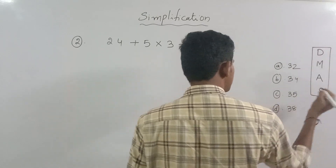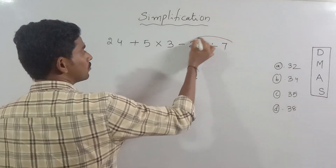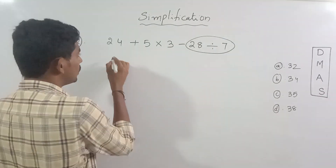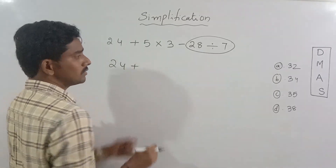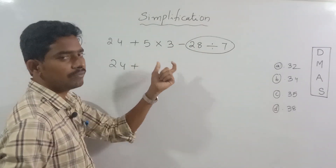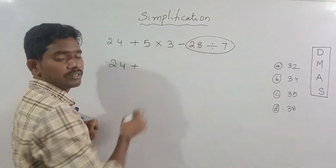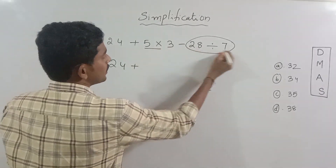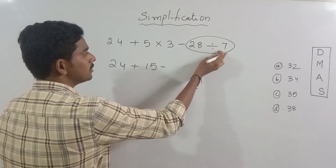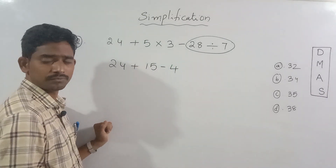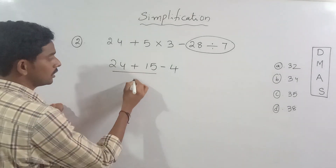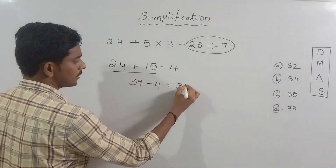First we have a division, so division equals the weight. Divisions: we will do this because this is minus. Then we will do this. Okay, 24 plus... this is the same — plus minus plus is the same number. We will do this. What is it? 39. 4 cut. So 35 is the correct answer.